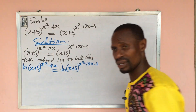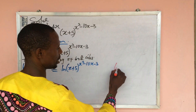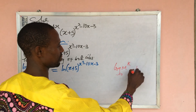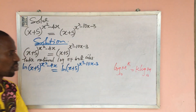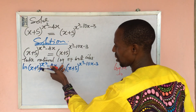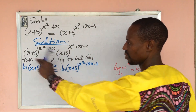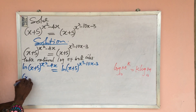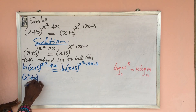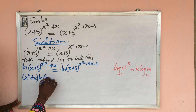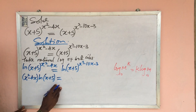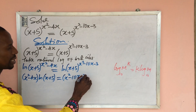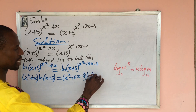Now there is a law of logarithms that says if you have log of M to the power of k, you can bring the power down to give you k·log(M). So we move the powers forward. This gives us: (x² - 4x)·ln(x + 5) equals (x² - 10x - 3)·ln(x + 5).